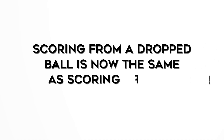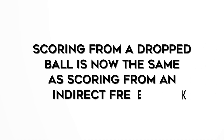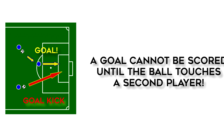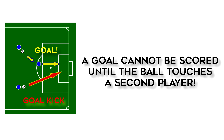While a player may still play the ball from a drop ball with multiple touches, such as dribbling away with it, that player may not score a goal until the ball touches somebody else on the field first. If a player dribbles away from a drop ball and shoots the ball into the goal without it touching any other player, no goal is rewarded and play is restarted with a goal kick.